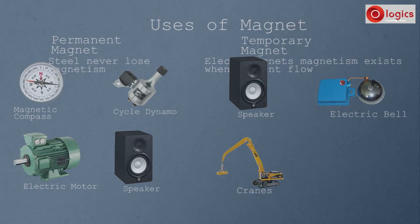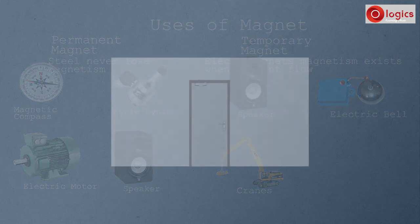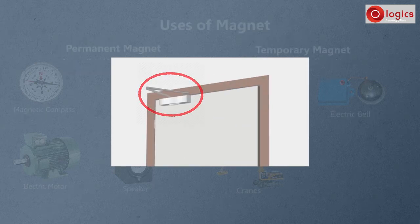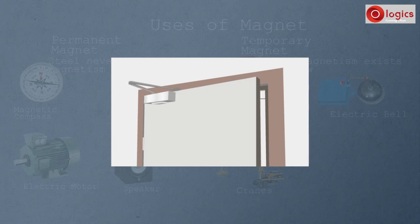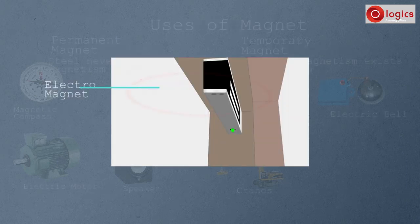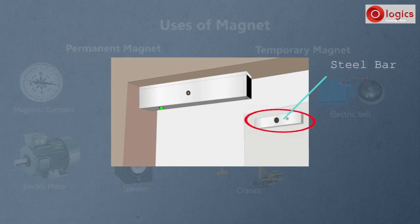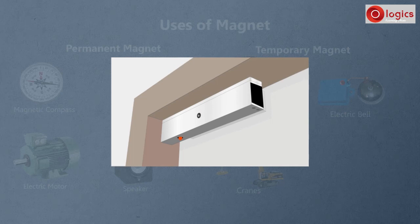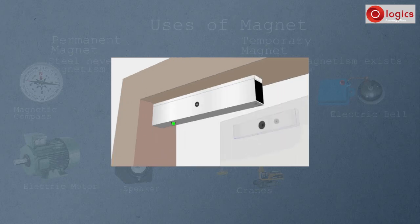Another important use of electromagnets is in door locks. This is an electromagnetic door lock. The electromagnetic part of the lock is fixed here, and a steel bar is fixed to the door. When the door is closed, the electromagnet strongly holds the door through the steel bar and the door cannot be opened. To open the door, the current through the electromagnet is stopped, and the door will open.